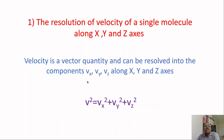Step one: resolution of velocity of a single molecule along the x, y, and z axes. Velocity is a vector quantity and can be resolved into components Vx, Vy, and Vz along the x, y, and z axes. Therefore, we write the equation: V² = Vx² + Vy² + Vz².